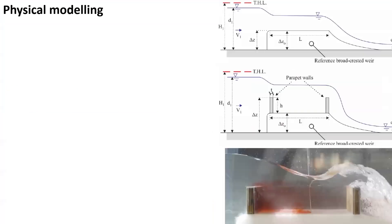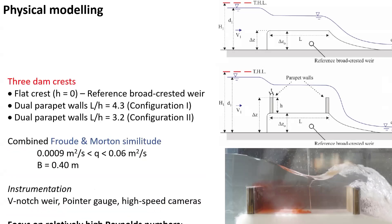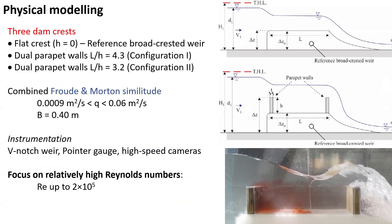The work was done physically at the University of Queensland in the hydraulics laboratory using three configurations: a reference flat crested or broad crested weir, and two configurations with dual parapet walls. A combined Froude and Morton similitude was applied across a very large range of unit discharge, with a focus on relatively high Reynolds numbers.